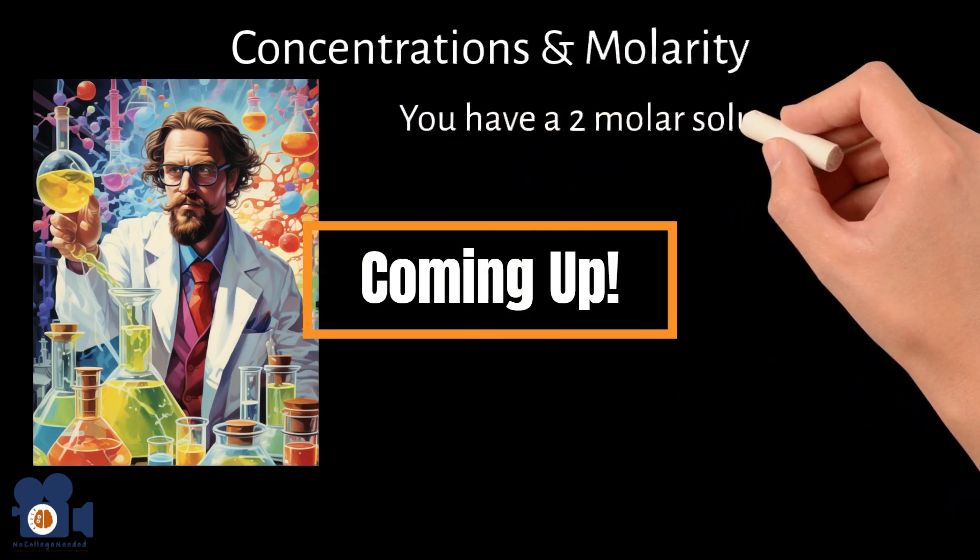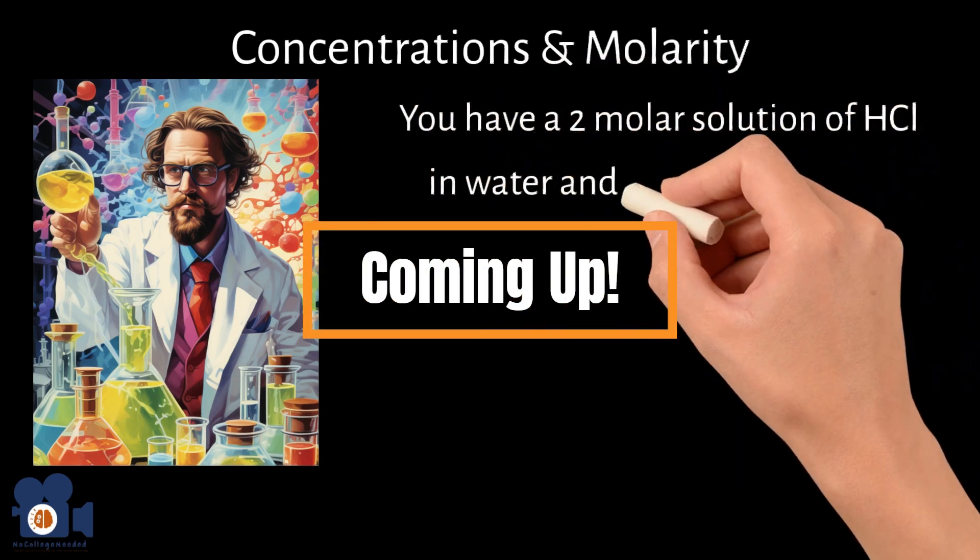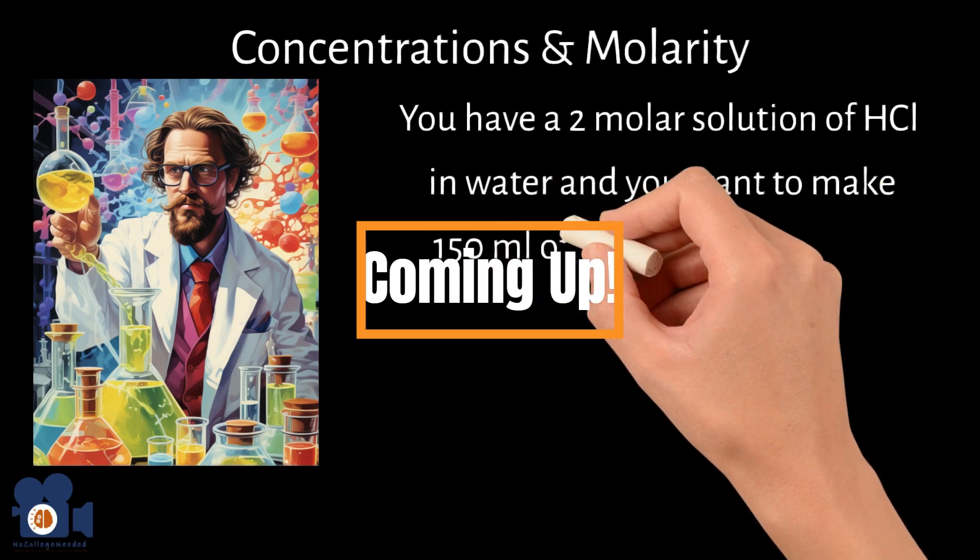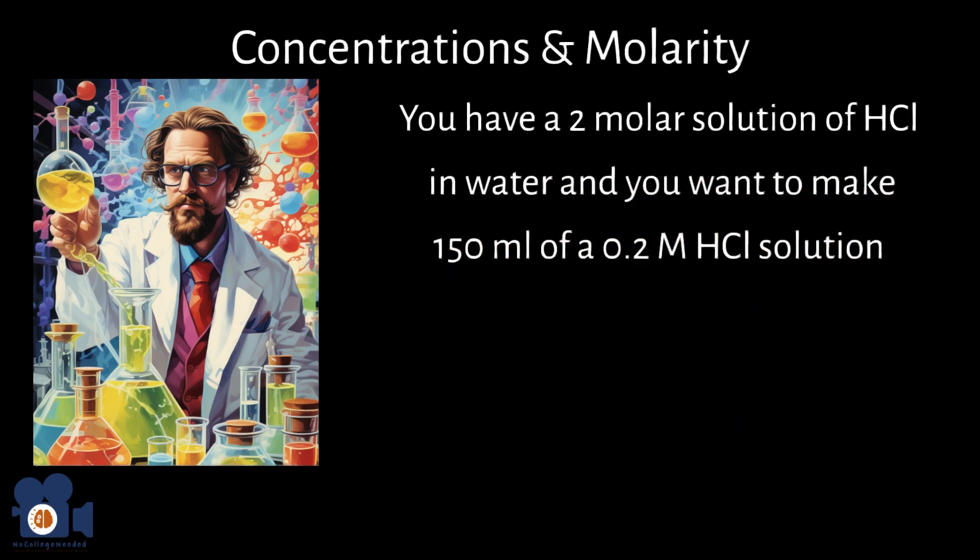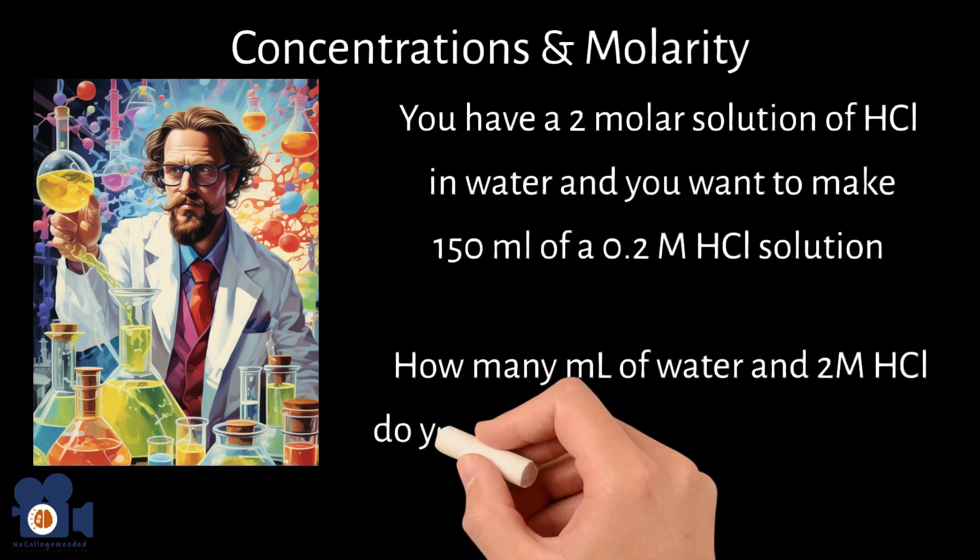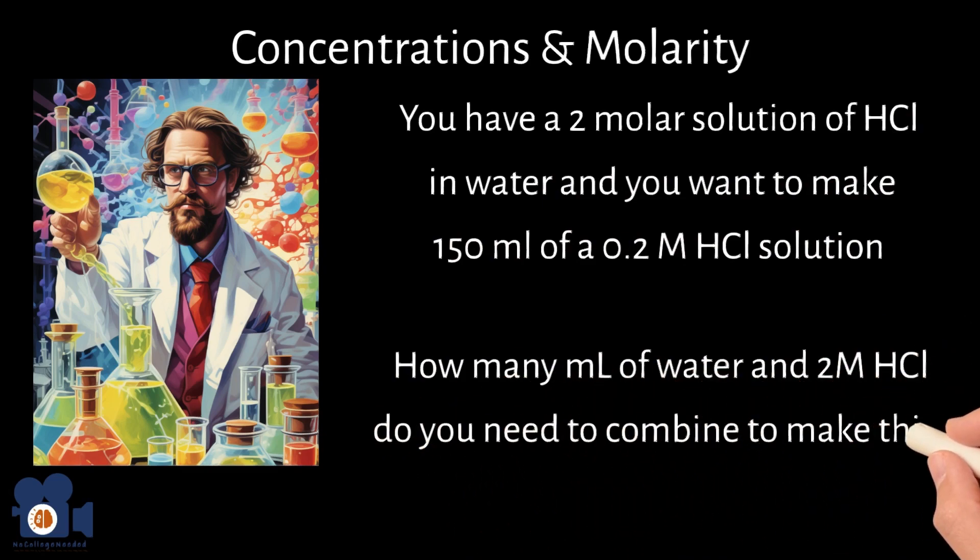Let's say you have a 2 molar solution of HCl in water, and you want to make 150 milliliters of a 0.2 molar HCl solution. How many milliliters of water and 2 molar HCl do you need to combine to make this?